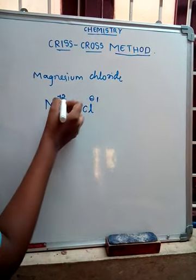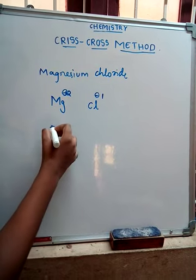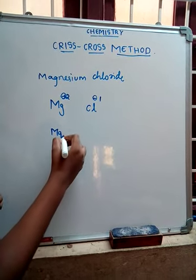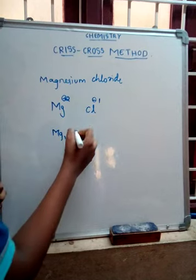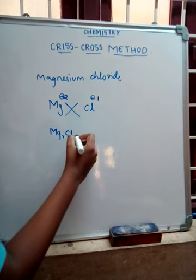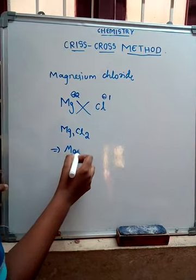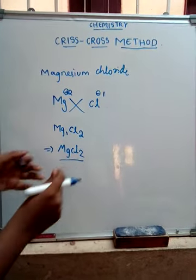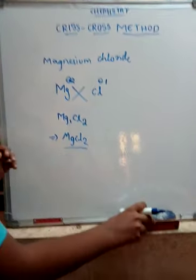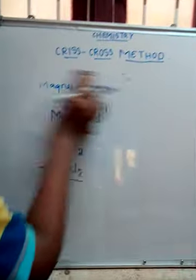So, ignore the charges. Write Mg as it is here. Mg gets 1. Cl gets 2 on that side. Cl2. This is the formula for magnesium chloride, MgCl2. Let us take another example so that it will be easy.